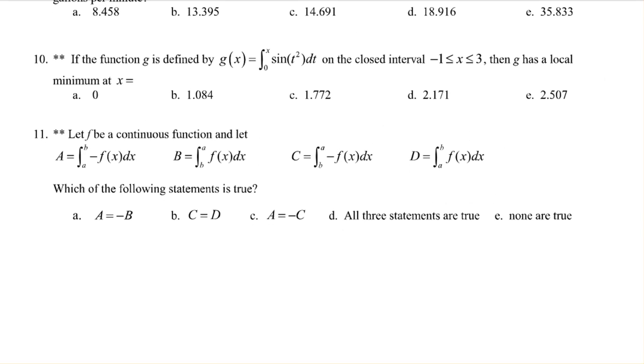Alright, problem 10. This is a calculator question. If the function g is defined by g(x) equals the integral from 0 to x of sine of t squared dt on the interval negative 1 to 3, g has a local minimum at x equals what?